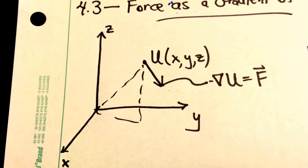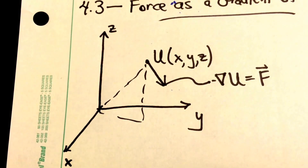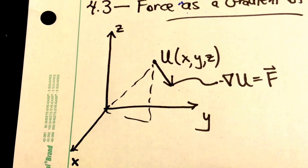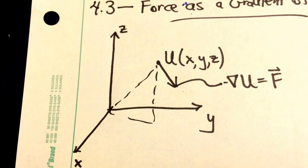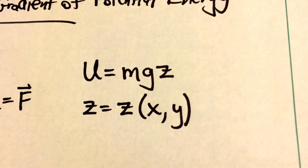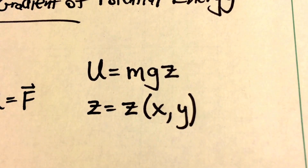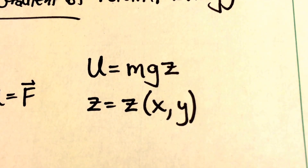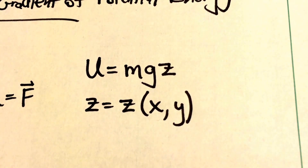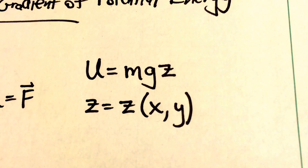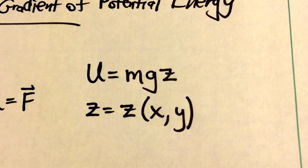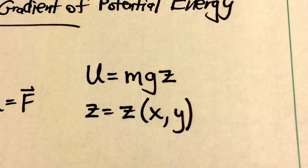We're going to narrow our focus to a very illustrative example where we use two of the coordinates, x and y, to specify the position. The third coordinate is going to be related to the potential energy function directly. The potential energy function we're going to use is gravitational potential near the surface of the Earth. The gravitational potential energy is the mass of the particle times the gravitational acceleration times height. So here we're going to use z as our height coordinate, and we're going to imagine that our z coordinate is a function of x and y.